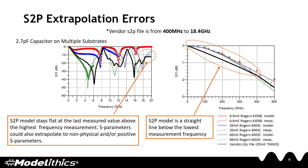Another advantage of models over S2P files is the avoidance of extrapolation errors. When the simulation exceeds the highest measured frequency of the S-parameter data file, it could be extrapolated to a flat line, or it could even go non-physical, going to positive S-parameters depending on how the simulation is set up. A similar problem exists at low frequency — when the lowest frequency data point of the S2P file is exceeded, the simulator will simply extrapolate the performance as a straight line.